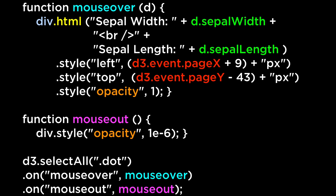In the case of the scatterplot, we'll select all the circles with a class of dot and add the d3 selection dot on mouse over and mouse out event listeners, as well as specify what functions should be run when the events are triggered.